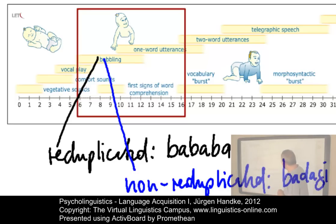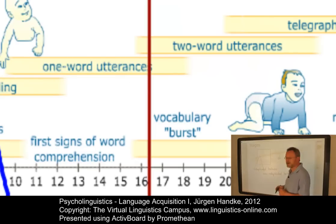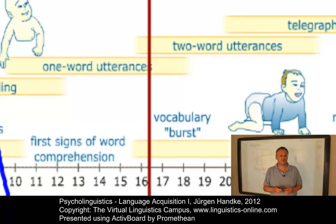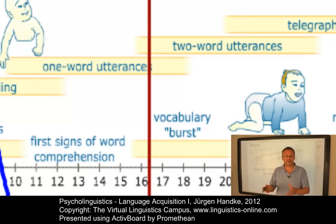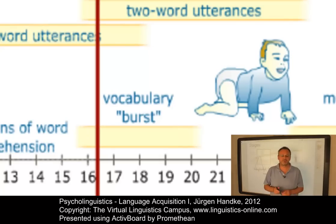First signs of comprehension accompany this stage, so children now acquire the association between situations and strings of sound. Then we can observe a one-word utterance phase, where children first use names for objects, then name actions or motions, and later use words to pick out thematic roles played by objects such as agent, action and object. We then find a phase where there is an enormous vocabulary burst — an acceleration in the rate of vocabulary growth.